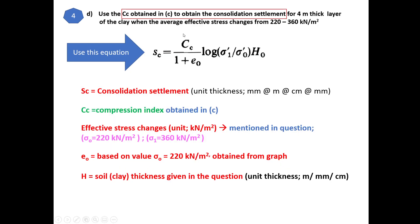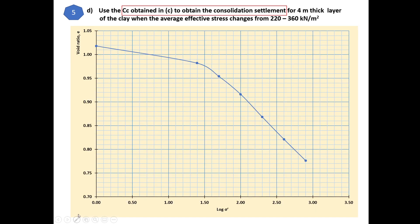Now we use the compression index obtained in part c to determine the consolidation settlement. We use the equation for Sc that involves the Cc value. Here, Cc is the compression index, the effective stress changes from 220 to 360 kN/m², e₀ is based on the initial stress σ₀', and H is the clay thickness, which is 4 meters as given in the question.